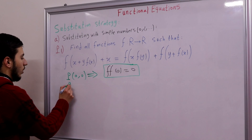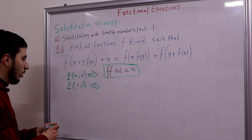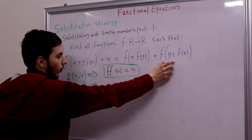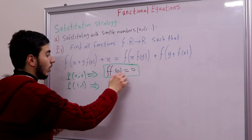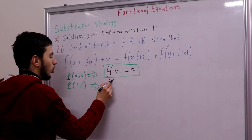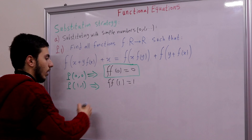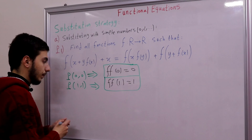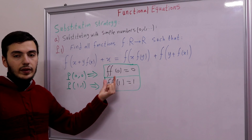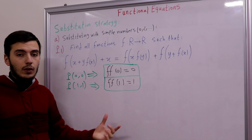Next, let's substitute P(1,1): we find f(1) + f(1) appearing on both sides, so those cancel, giving our second piece of information. Wouldn't it be nice to evaluate f(0) or f(1) directly rather than f(f(0)) or f(f(1))? Of course it would.